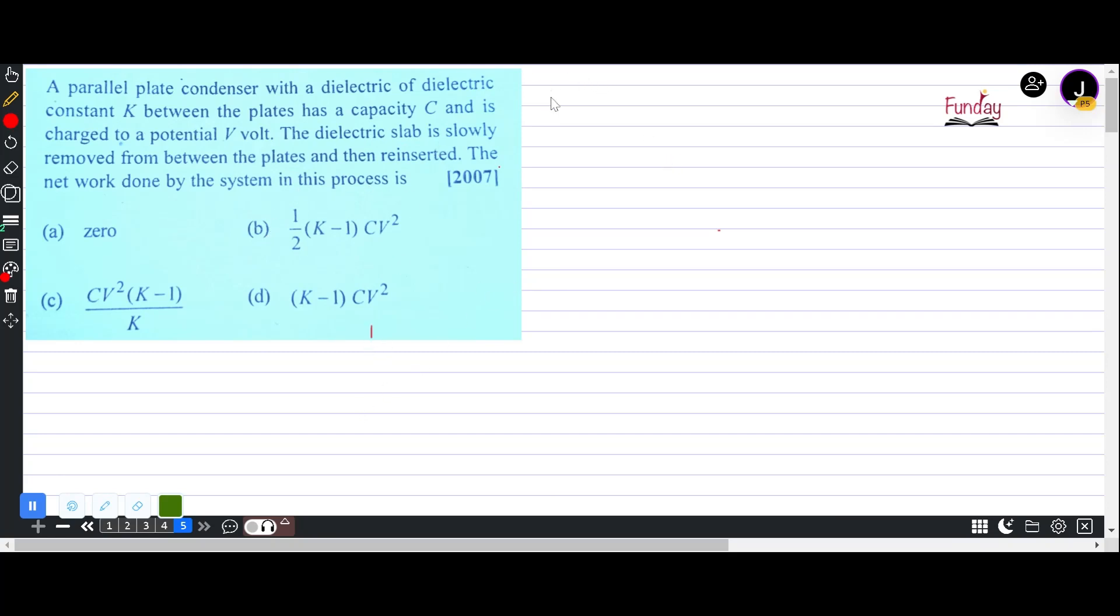Now we know that the initial potential energy of the system is half CV squared. After the dielectric is removed and reinserted, the total potential energy is still half CV squared, or we can take it as half Q squared by C because charge is constant. So there is no change in terms of potential or charge. Work done is going to be UF minus UI which is zero.